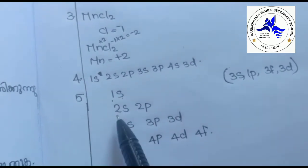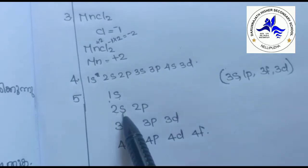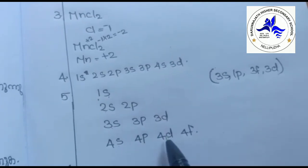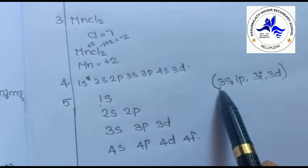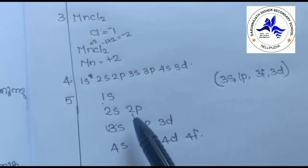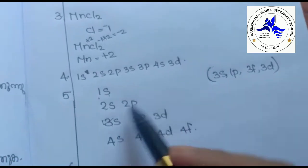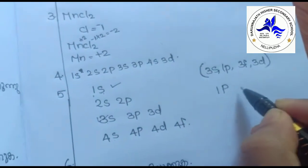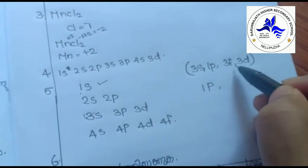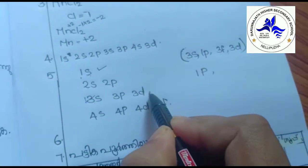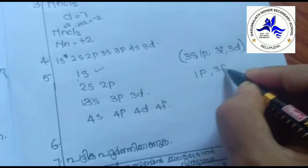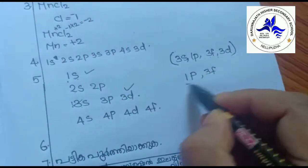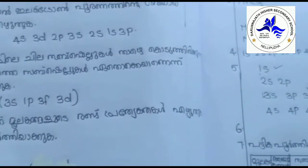Subshell is not the same. 2 shell is sp, 3 is spd, 4 is spdf. This is spdf. Then 1p, 2, 3f, 3d. This is spdf. So this is the answer.